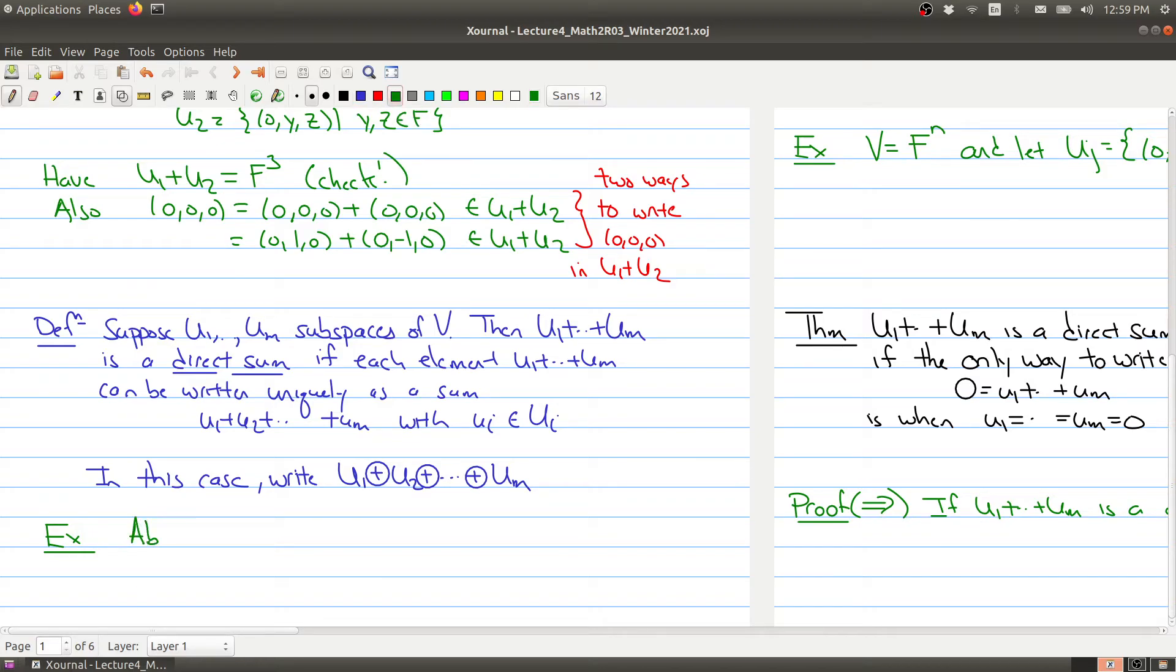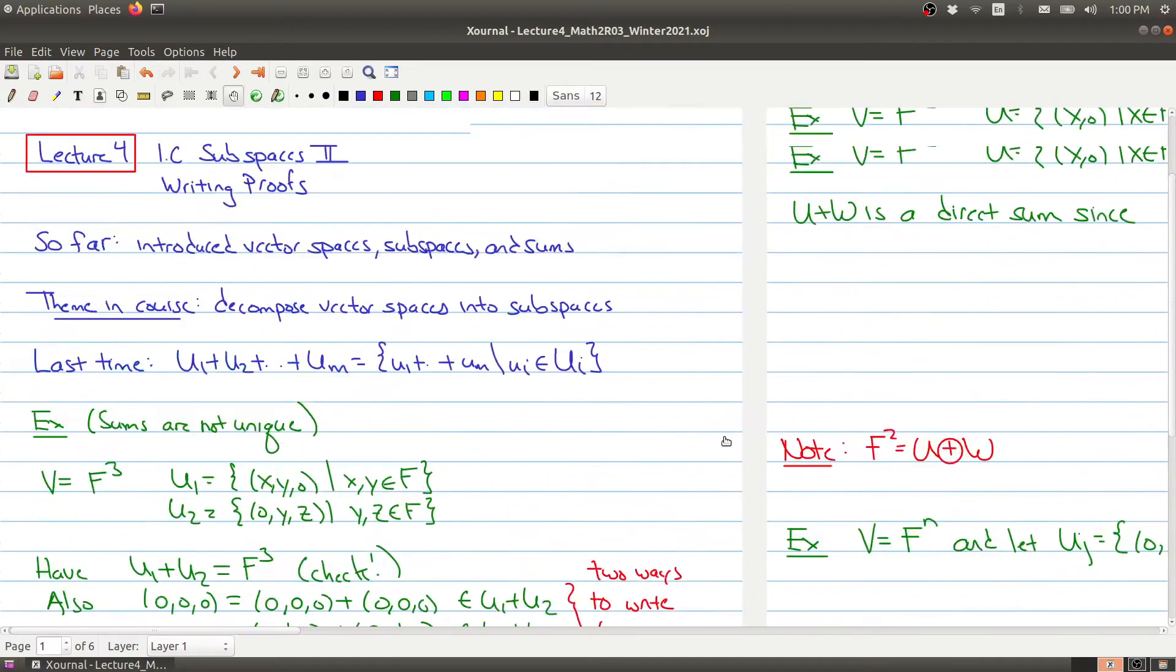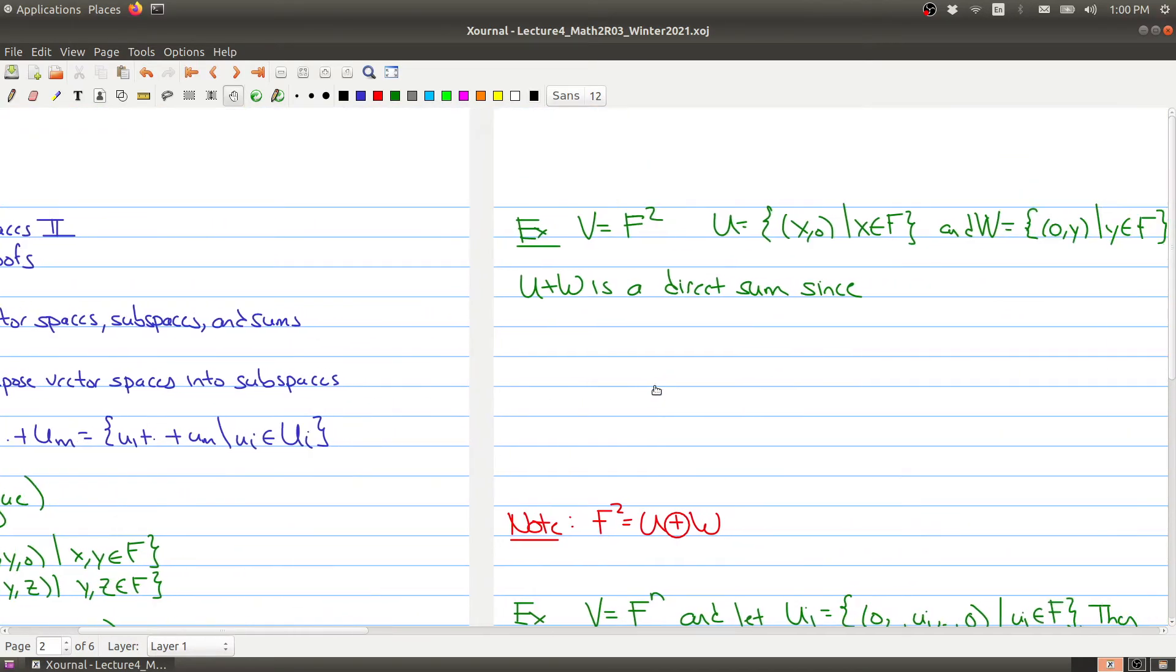So what we wanted is to get around what we were seeing up in here. We're looking for a sum where when we take something in the sum, it can only have come by building it in one particular way, where the first thing came from U_1, the second thing came from U_2, and so on. And in order to stress that we have a direct sum, we use this notation. We put a plus with a circle around it. So this will mean a direct sum. As an example, the above example is not a direct sum, since we can express 0, 0, 0 in two different ways.